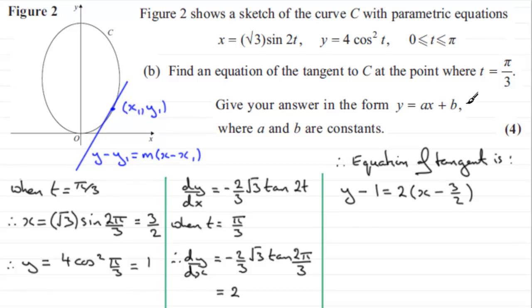Let's expand the bracket because we've got to get this in the form y = ax + b. If I expand the bracket I get 2x - 3. Add 1 to both sides and therefore I get y = 2x - 3 + 1, which is -2. So the equation of the tangent here would be y = 2x - 2.